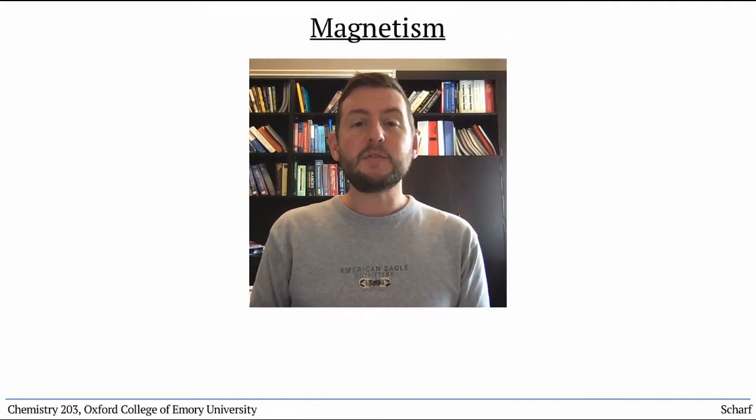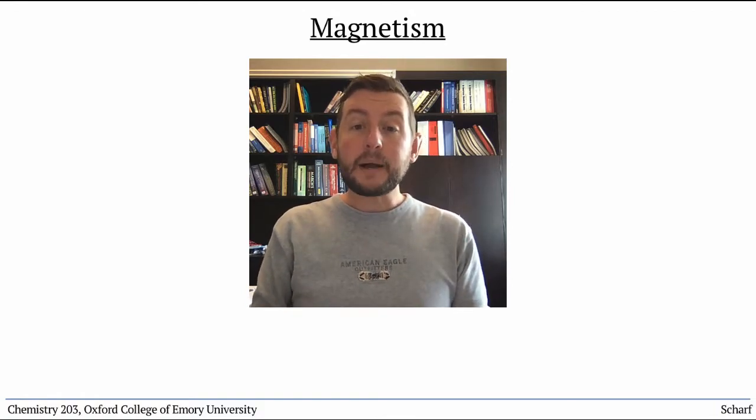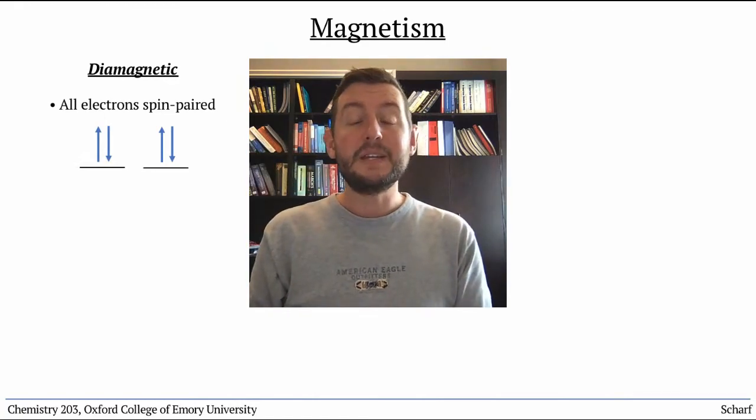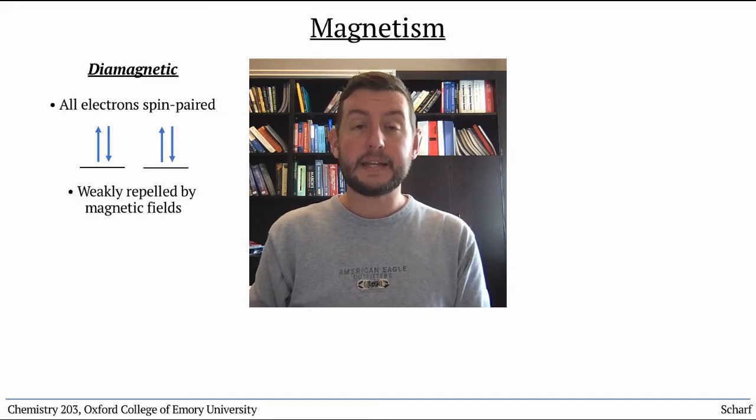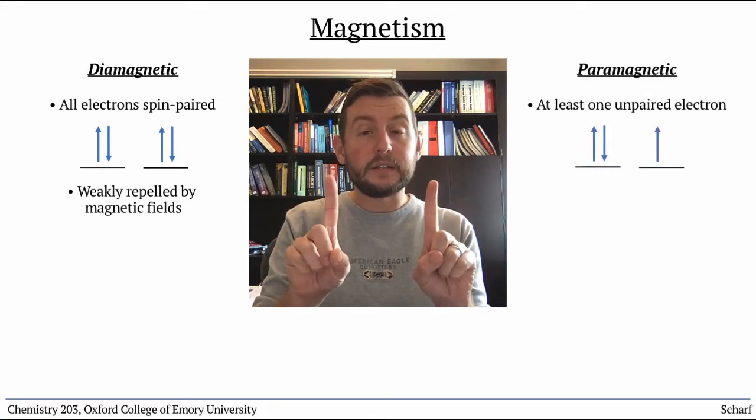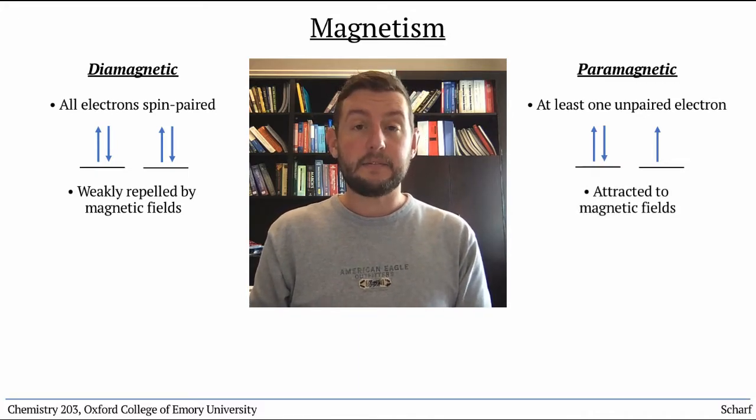Magnetic properties arise from particular arrangements of electrons. Compounds with all their electrons spin-paired are said to be diamagnetic. These compounds are very weakly repelled by a magnetic field. Compounds with unpaired electrons are paramagnetic; they're attracted to magnetic fields.